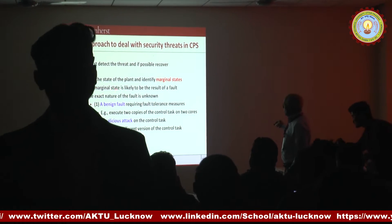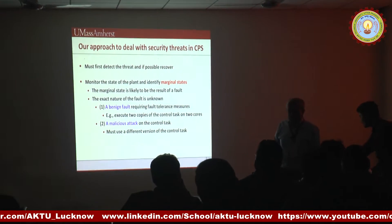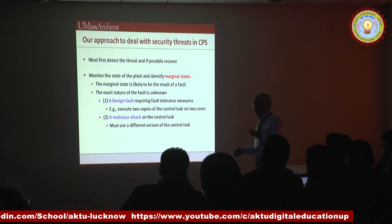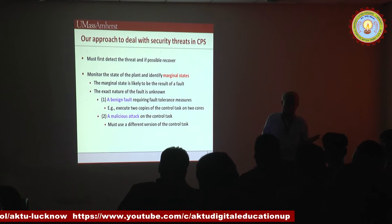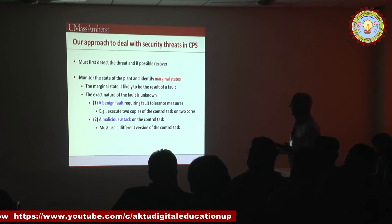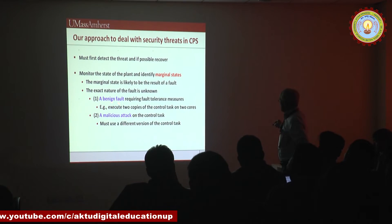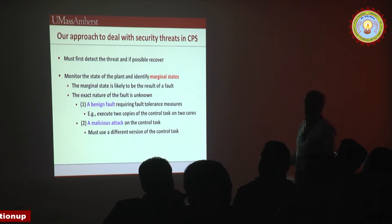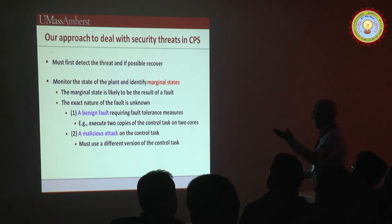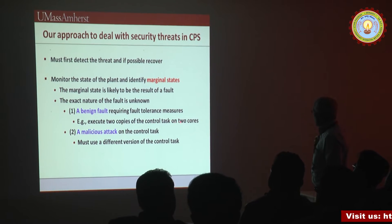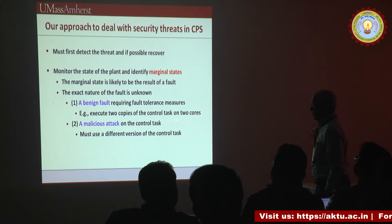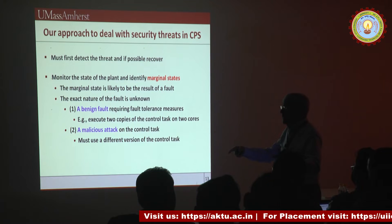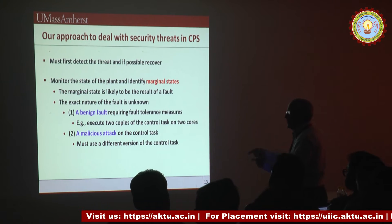We know that a marginal state is most likely the result of a fault. However, at this point, we have no idea what type or nature the fault is. In most cases it would be a benign natural fault, which requires applying some fault tolerance. For example, we can execute two copies of the control task on two different processors and see if they don't match — meaning something is wrong.